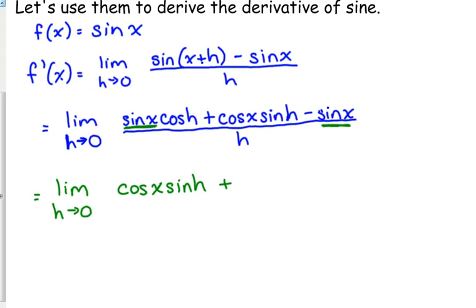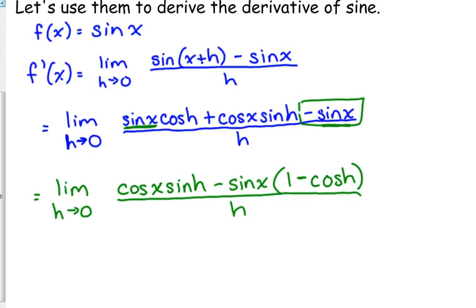So, I've got cosine of x, sine of h. I'm going to put that at the front. And then I'm going to factor out, actually, I'm going to factor out a negative sine of x. And if I take out a negative sine of x, I had negative sine of x, so that leaves me with a 1. And I had positive sine of x, cosine of h, so that makes that negative. And I took out the sine of x part, so I've got cosine of h.